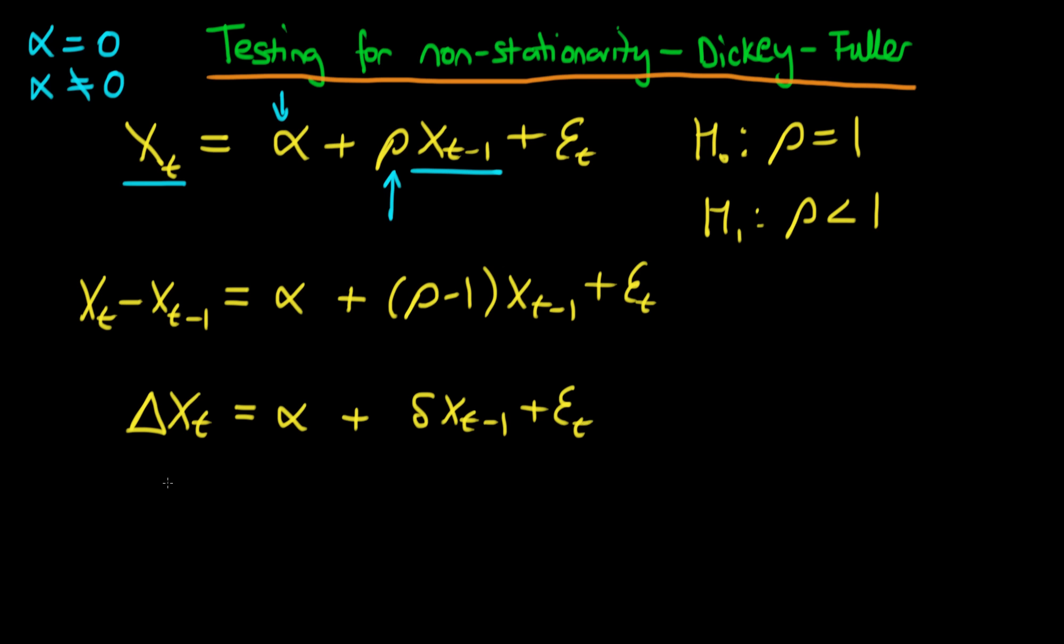Notice that under the null hypothesis that rho equals 1, this delta term would in fact vanish, so we wouldn't actually have this xt on the right-hand side.